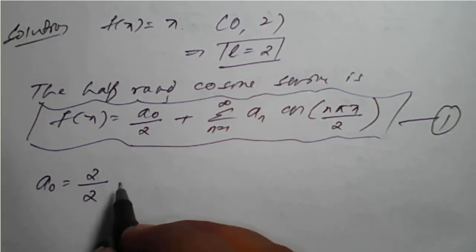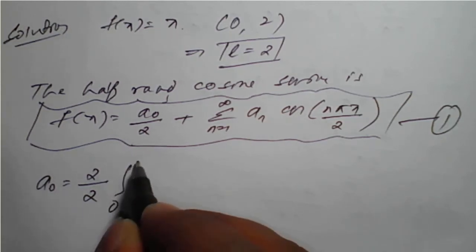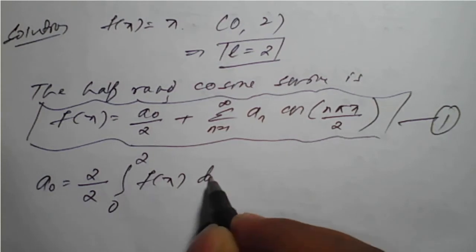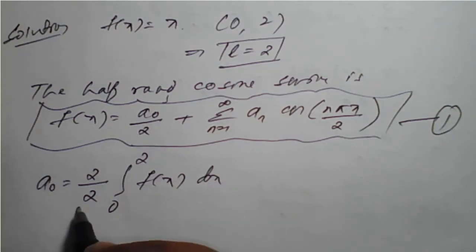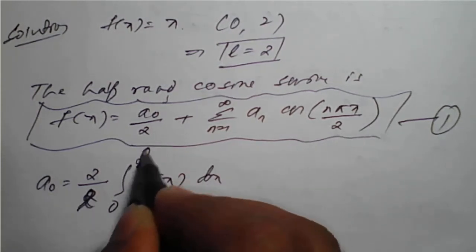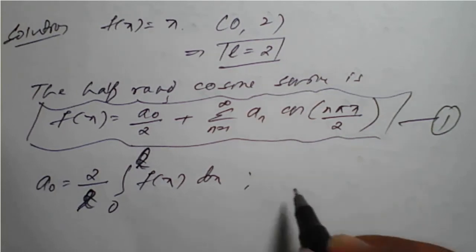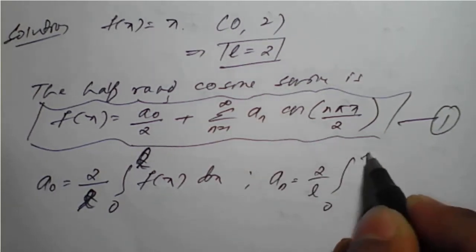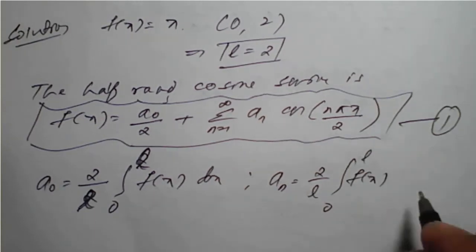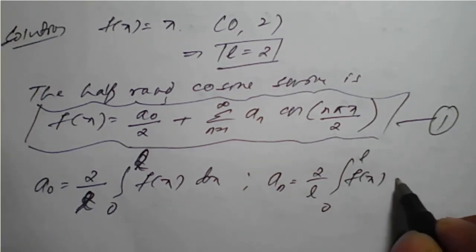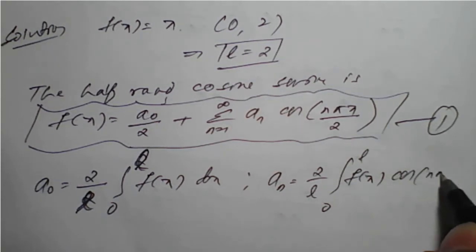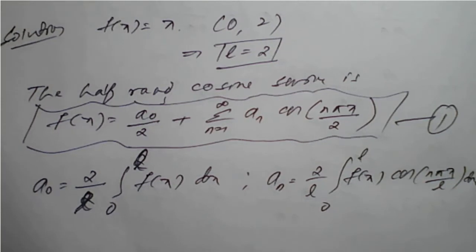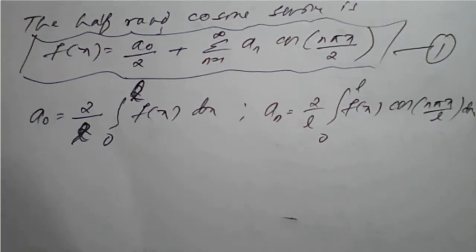The value of a₀ is: a₀ = (2/L) times the integral from 0 to L of f(x) dx, where L = 2, so it becomes (2/2) times the integral from 0 to 2 of f(x) dx. The value of aₙ is: aₙ = (2/L) times the integral from 0 to L of f(x) cos(nπx/L) dx, with L = 2.